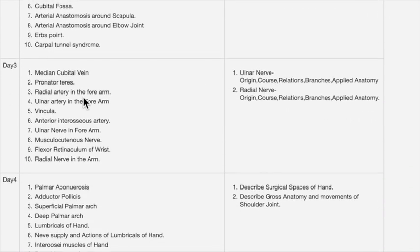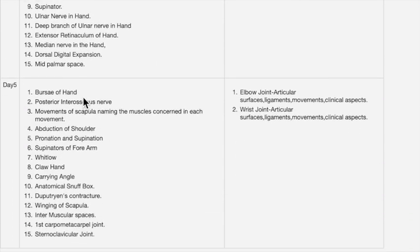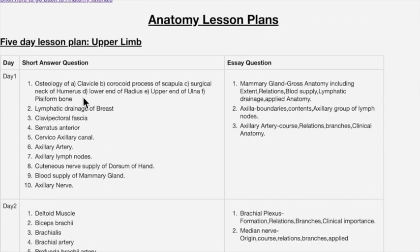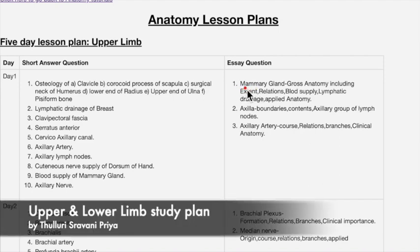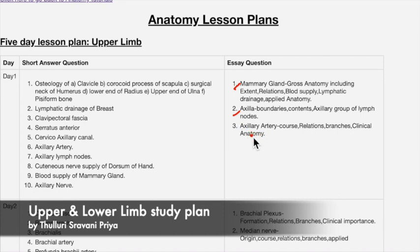These are the upper limb questions for five days. The essay questions and short answer questions for the first day include the mammary gland, which is the most important question, and the axilla and axillary artery. These two — mammary gland and axilla — are very important. After that, you can study the axillary artery. These are the essay questions for the first day.